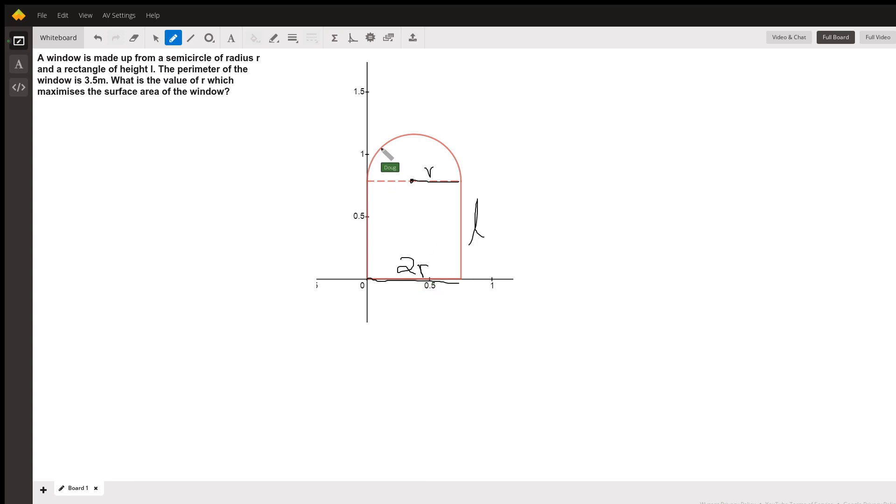And this distance is half the circumference of a circle with radius R. So we know the circumference is 2πR. So half of that will just be πR. So what we have is, given that the perimeter is 3.5 meters, an expression for the perimeter is: